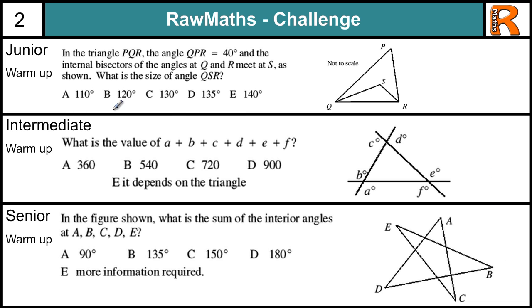Okay, the junior warm-up. We're told some information about this triangle. We're told that this angle here QPR is 40 and we're told that the internal bisectors of angles Q and R meet at S. Well, what are internal bisectors? Well, that means it cuts the angle in half. So whatever this is, if I call that A, this is also A and whatever this is, if I call that B, this is also B.